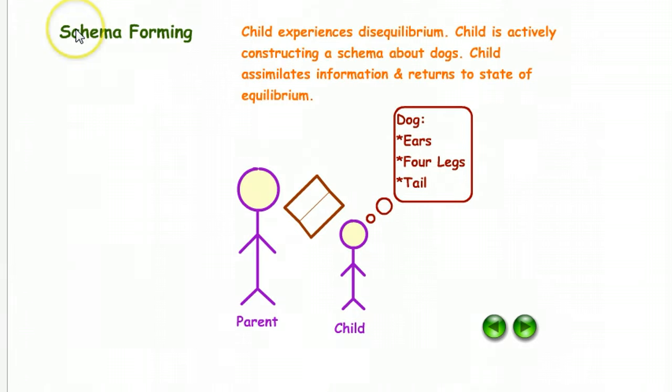Then the schema is forming. The child experiences disequilibrium. The child is actively constructing a schema about dogs. The child assimilates information and returns to a state of equilibrium. The child is thinking: dog, ears, four legs, tail.